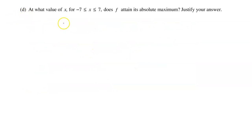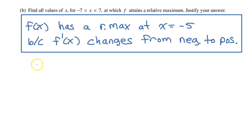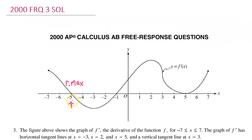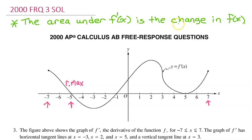Part D is not so straightforward. At what value of x on the closed interval from negative 7 to positive 7 does f attain its absolute maximum? Justify your answer. The only relative maximum is at x equals negative 5, so the candidates for the absolute maximum are the endpoints negative 7 and positive 7, plus x equals negative 5. The key concept: the area under f prime is the change in f of x.